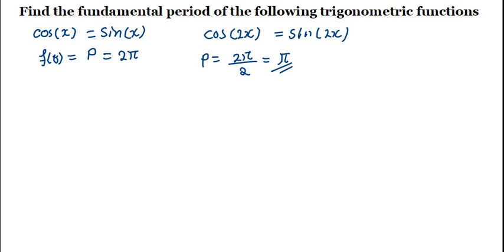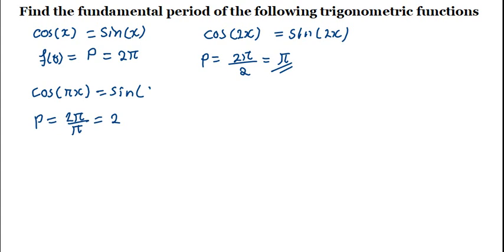Let me say I give you something like cos pi x. What is it going to be? All the same — the period is going to be equals to 2 pi divided by the coefficient of x, which is pi. Meaning the period of cos pi x is going to be equals to 2. And the same applies if you are given sine pi x.